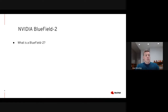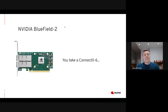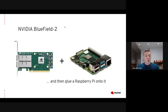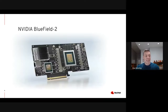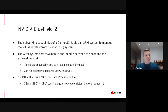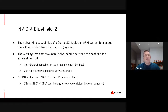So this brings us to the BlueField 2. What is it? Well, basically you take a ConnectX6 card and then you glue a Raspberry Pi onto it. Seriously though, it's basically the networking capabilities of a ConnectX6 plus an ARM system running on the card to manage the NIC, which is separate from the host system that the card is installed in. There are a few different modes that the card can run in, but in the one we're interested in, the ARM system basically acts as a man in the middle between the host and the external network. It can control what packets make it into and out of the host, and it can run arbitrary additional software to monitor, analyze, and filter the packets.